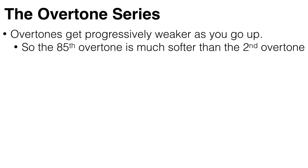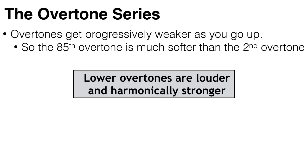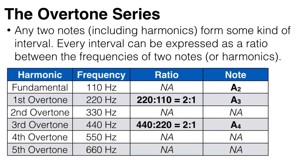Now while each instrument is different, generally overtones get progressively weaker the higher up you go. So the 85th overtone is much harder to hear than the second or third overtone. A rule to remember is that lower overtones are louder and harmonically stronger. Each of these harmonics is a particular musical note, and any two notes — including two harmonics — form some kind of interval. So every interval can be expressed as a ratio between the frequencies of two notes or harmonics.